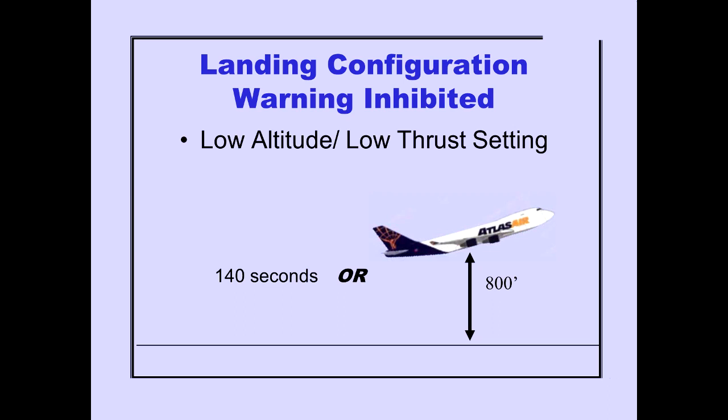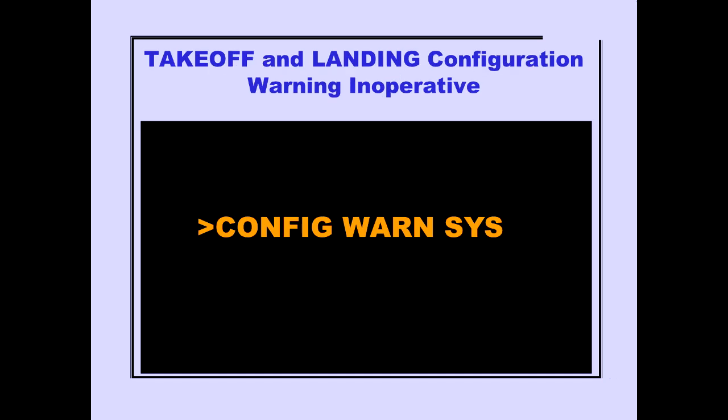The warning is inhibited for up to two thrust levers retarded. If the takeoff or landing configuration warning systems are inoperative, the configuration warning system message is displayed on ICAS. If the system fails, configuration warning messages may or may not be displayed, and they may not be correct.